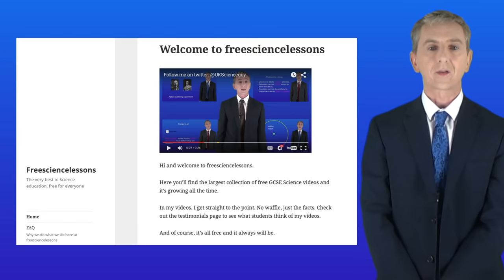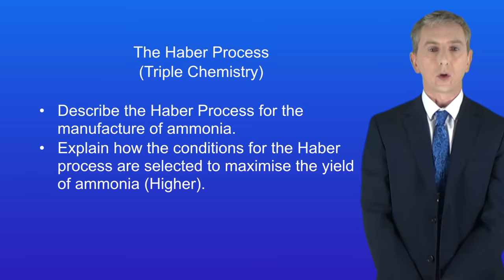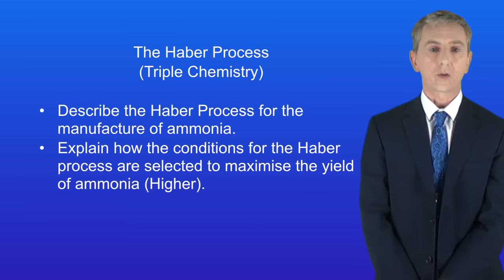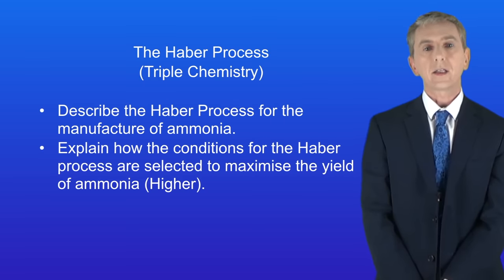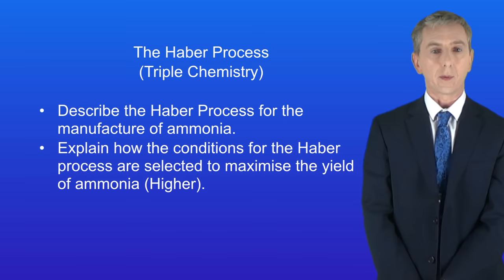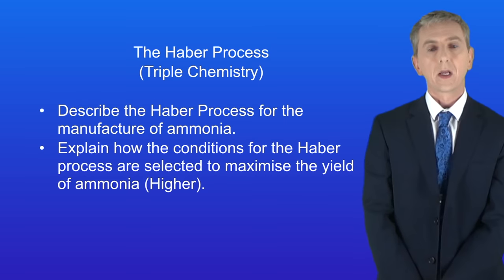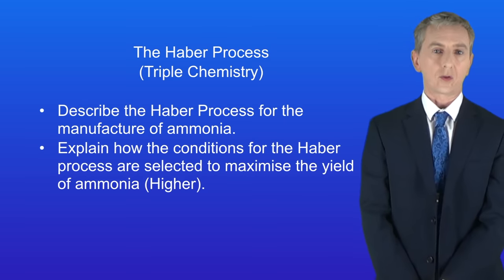Hi and welcome back to freesciencelessons.co.uk. By the end of this video you should be able to describe the Haber process for the manufacture of ammonia, and if you're a higher tier student you should be able to explain how the conditions for the Haber process are selected to maximise the yield of ammonia. All of this is for triple chemistry students only.